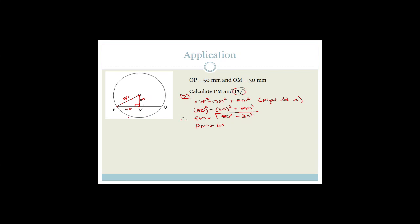Now they want PQ. PQ is just double PM — because the theorem says that the line perpendicular from the center of the circle is a bisector of the chord. So PQ equals 2 times 40, which is 80 millimeters. The reason is that OM is the perpendicular bisector of PQ. By writing that, you're showing you know the theorem.